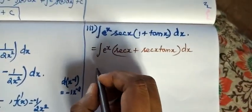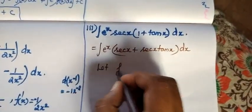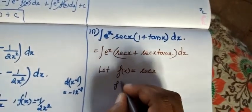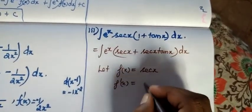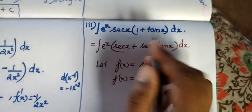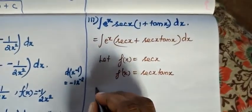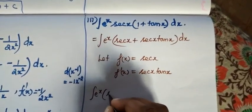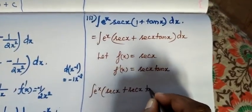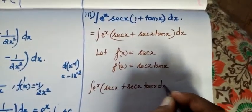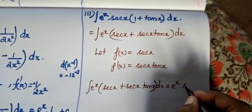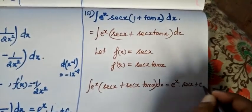Let f(x) equal sec(x). Then f'(x) is sec(x)tan(x). We can see the integrand matches the form f(x) plus f'(x). So integral eˣ (sec(x) plus sec(x)tan(x)) dx equals eˣ times f(x), giving eˣ sec(x) plus c.